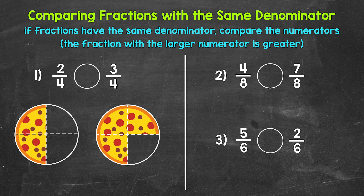Let's jump into number one, where we have 2 fourths and 3 fourths. So reading this comparison from left to right, we have 2 fourths is greater than, less than, or equal to 3 fourths. So which fraction here is greater? Now if fractions have the same denominator, all we have to do is compare the numerators, the top numbers. The fraction with the larger numerator is greater.